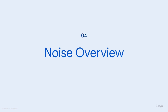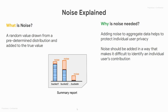Now that we've seen the creation of aggregate reports and how that turns into a summary report, we will dive a little deeper into discussing noise and the various parameters that impact it. We can start by looking at what noise is. Noise is a random value drawn from a predetermined distribution and added to the true value. In this image, the orange portion of the bars would be the random noise values that were drawn and then added to the true values, which would be the blue portions of the bars.